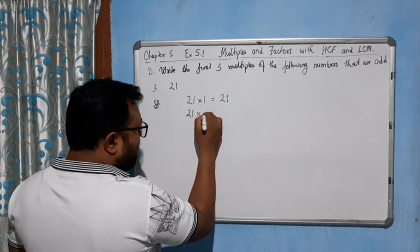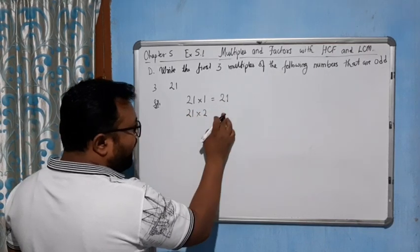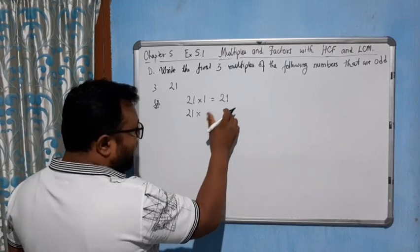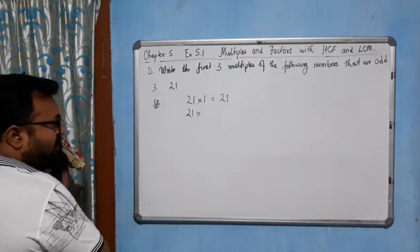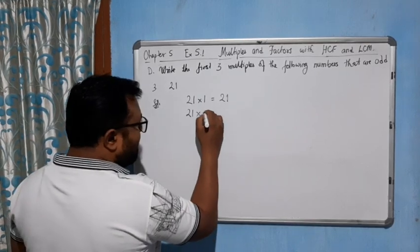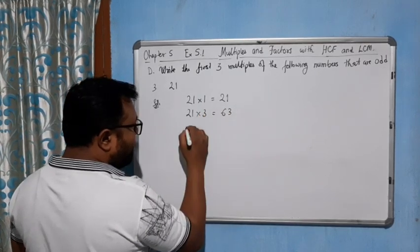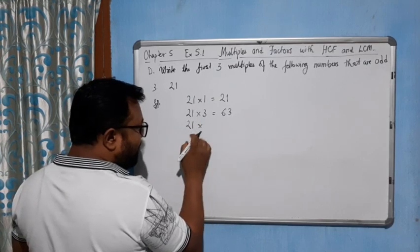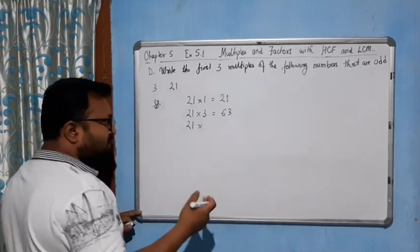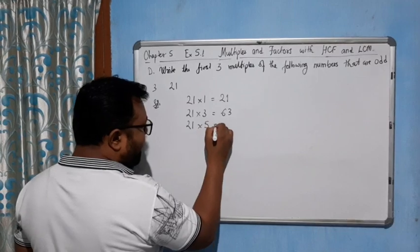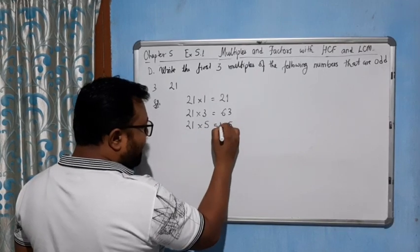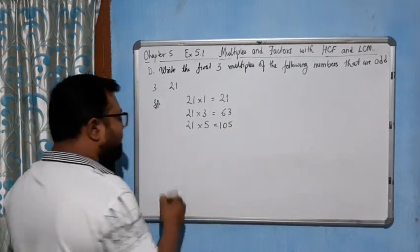21 times 2, if I write it becomes 42, so it will be an even number, we can't take that one. So let's move to the next number 3. 21 times 3 is 63, it's an odd number. 21 times 4 is 84, an even number, so we move to the next number 5. 5 times 21 is 105, an odd number.